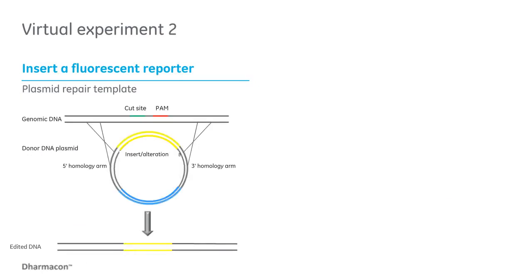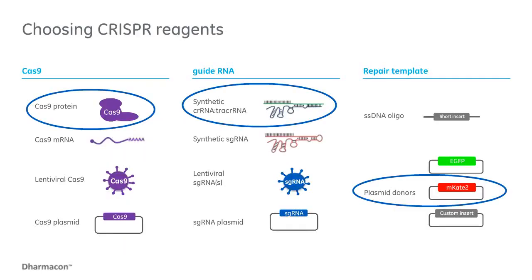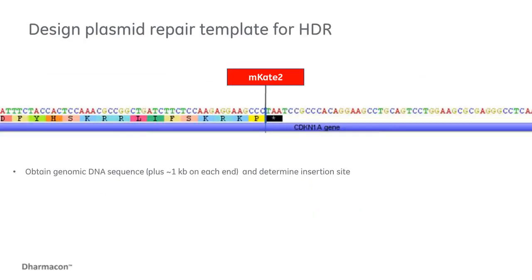Now we can talk about the second virtual experiment, where we will use a plasmid repair template to create a fluorescent gene fusion. For this experiment, we will demonstrate using Cas9 protein, the synthetic two-part guide RNA, and the MK2 plasmid repair template. I'm not going to repeat the steps for guide RNA design or transfection optimization, as those steps are the same regardless of the type of repair template. We're going to jump right into designing and assembling our plasmid donor for fluorescent knock-in.